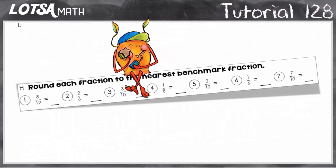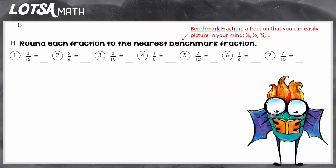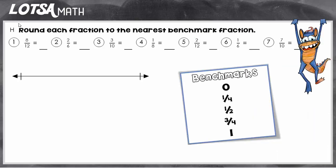For these questions, we're going to round each fraction to the nearest benchmark fraction. A benchmark fraction is just a fraction that you can easily picture in your mind. We use one-fourth, one-half, and three-fourths as the benchmark fractions. We also include zero and one. So let's do some examples to learn how we would round fractions.